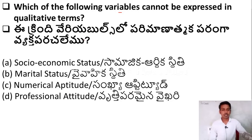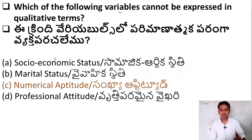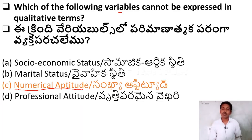The questions and options are also available in Telugu. The right answer is Option C — numerical attitude. Numerical numbers cannot be expressed in qualitative terms, so Option C is the correct answer.